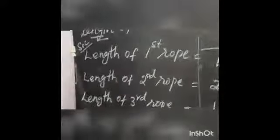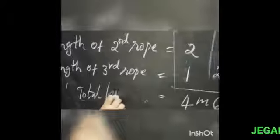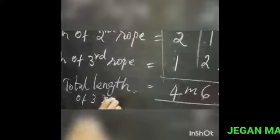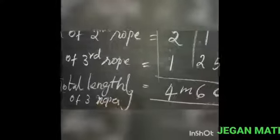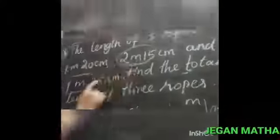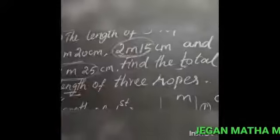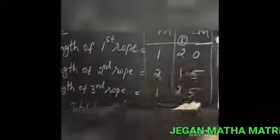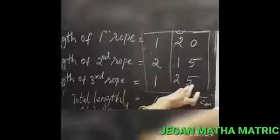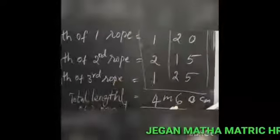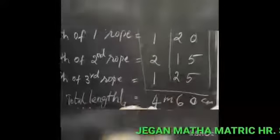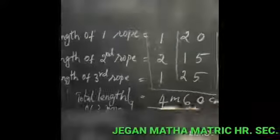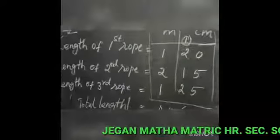The total length is 4 meter 60 cm. This is the total length of the 3 ropes. Is this clear, students? So separately the lengths of the 3 ropes are given, and the question asks to find the total. Write the steps, separate the meter and centimeter values, fill in all the numbers, add from the right side — 5 plus 5 is 10, carry 1, tens place gives 6, meter place gives 4. The total length of the 3 ropes is 4 meter 60 cm. That is your answer.